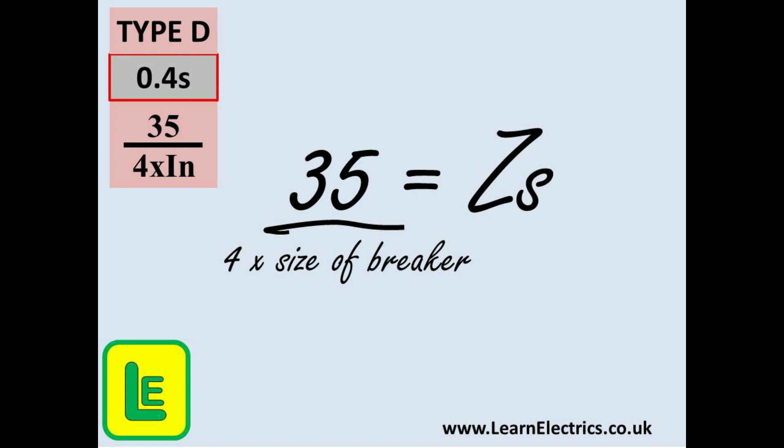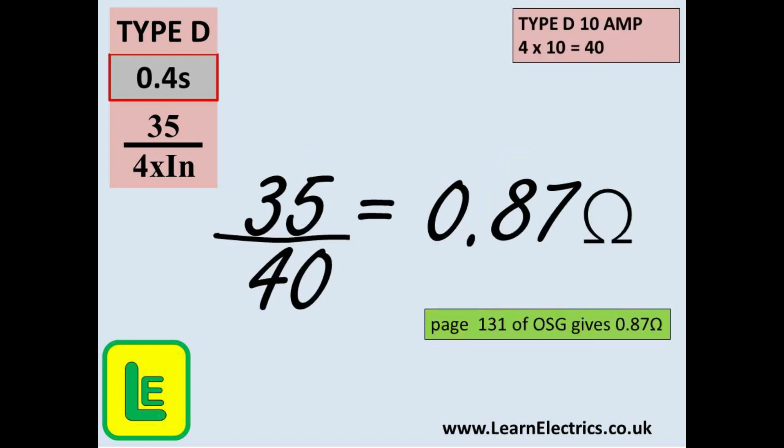Okay back to 0.4 seconds disconnection times and type D breakers. Now we must divide the number 35 by 4 times the breaker rating because the type D is even less sensitive. Showed at the top left is the calculation using symbols: 35 divided by 4 times IN. If we stay with the 10 amp circuit breaker, 4 times 10 is 40. Our calculation then is 35 divided by 40 and this will give us 0.87 ohms. Compare this to the book which is 0.87 and again we are spot on.